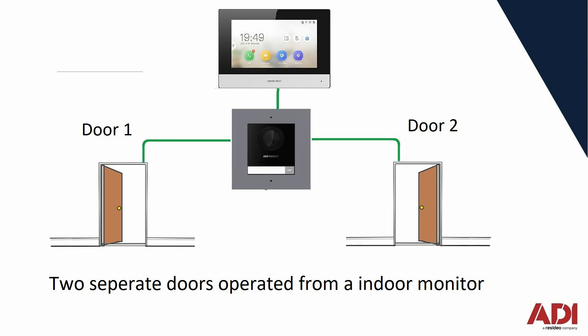Perhaps you have a vehicle entrance and a pedestrian gate next to each other, the intercom in the middle, and you want to be able to select which output you're going to operate — which relay you're going to operate. There are two relays on board the door station.